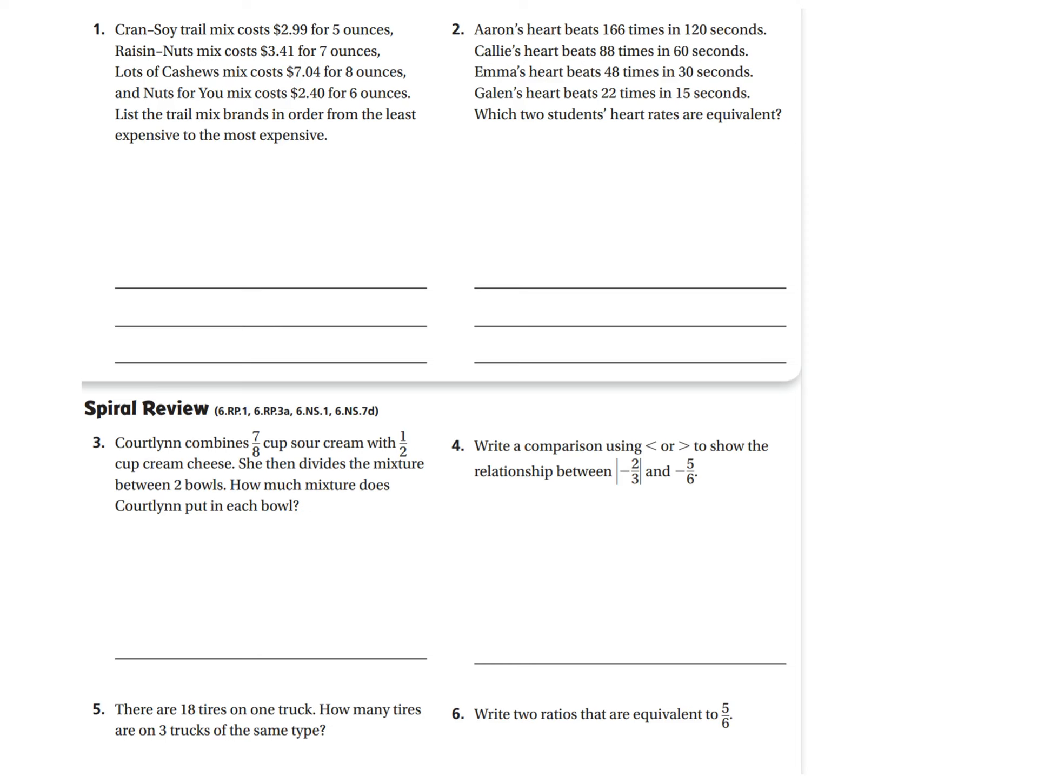All right, now we're on the back side, P78. Okay, number one, Cransoy Trail Mix costs $2.99 for five ounces. Raisin Nut Mix costs $3.41 for seven. Lots of Cashew costs $7.04 for eight. And Nuts for You costs $2.40 for six. List the Trail Mix brands in order from the least expensive to the most expensive.